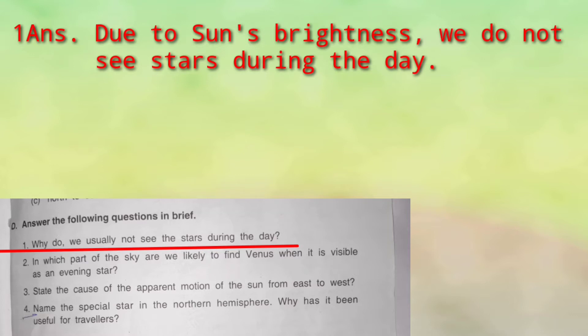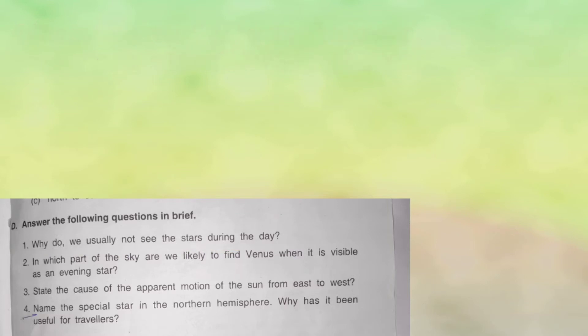We do not usually see the stars during the day due to the brightness of the sun. Okay, next: in which part of the sky are we likely to find Venus when it is visible as an evening star? Jab aapko evening star ki tarah woh dikhte hain Venus, toh woh kaunse sky mein kahan pe dikhte hain?